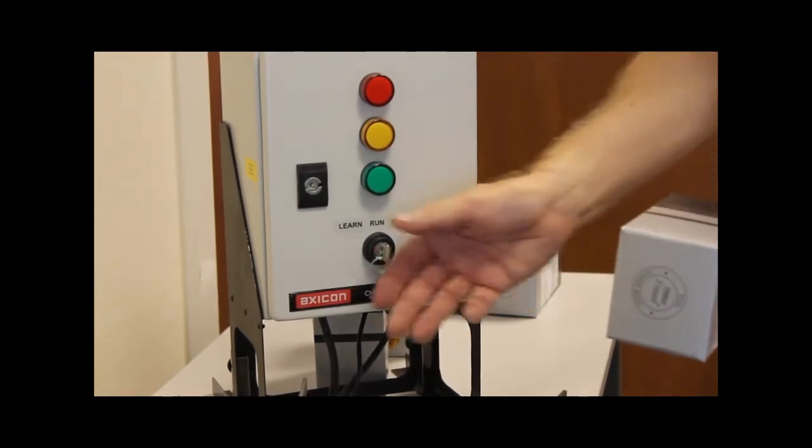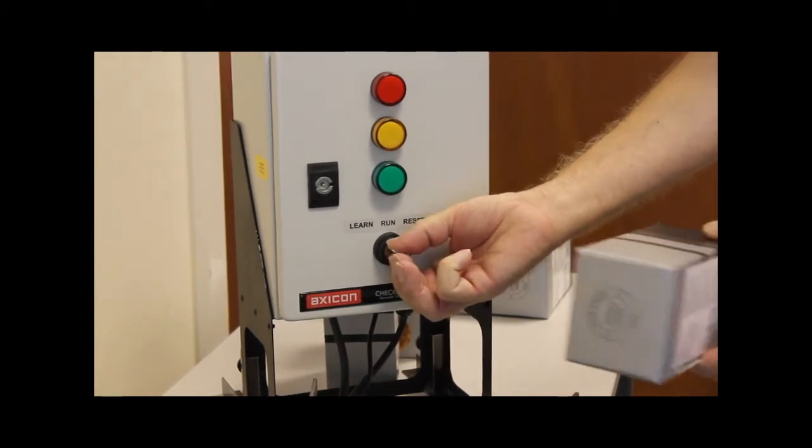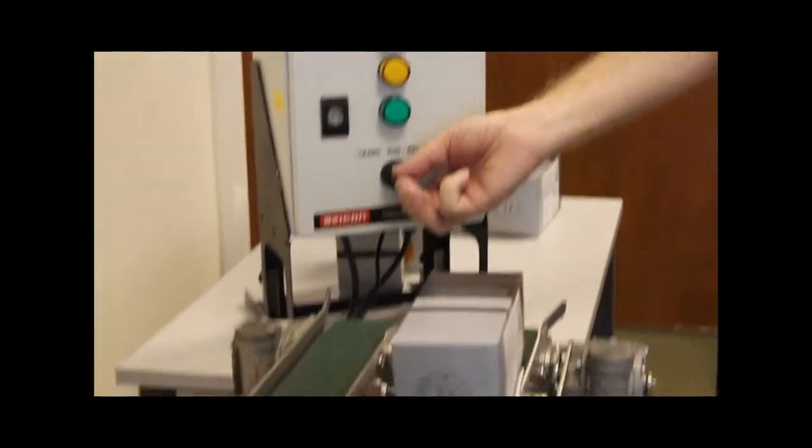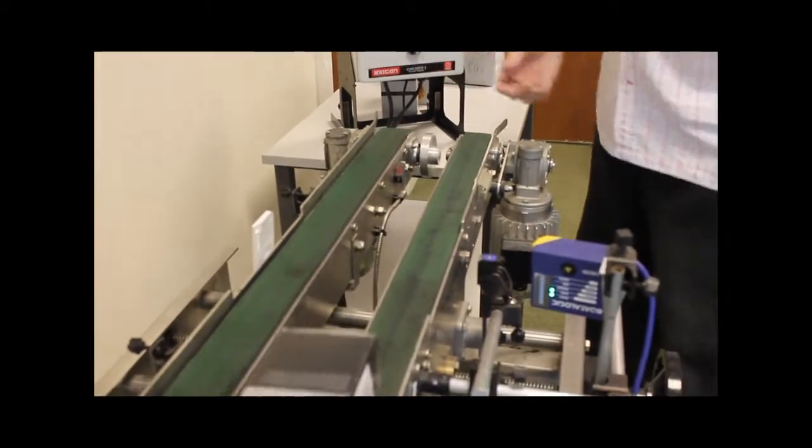We have to teach the CheckWrite 5 the correct barcode. First we have to reset it, then turn and hold the key in the learn position while scanning a sample of the correct barcode.